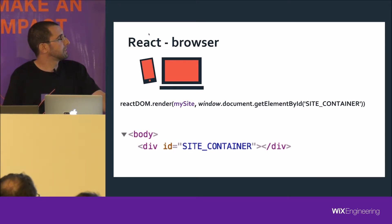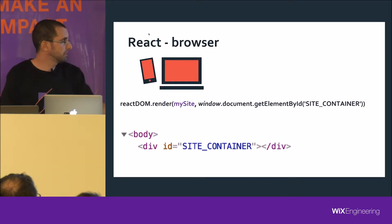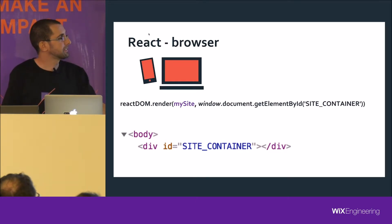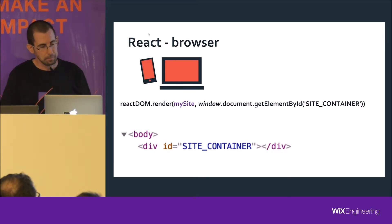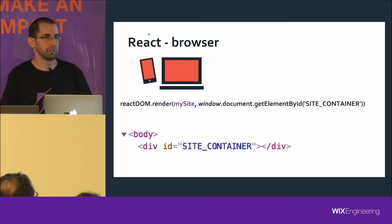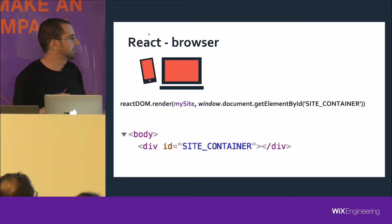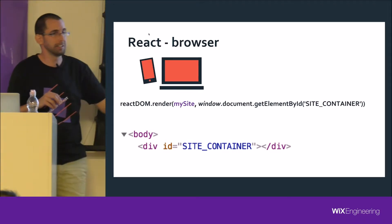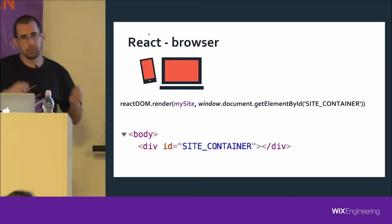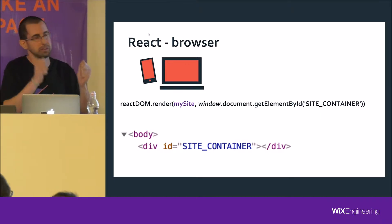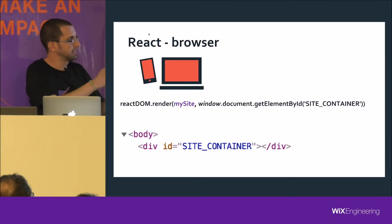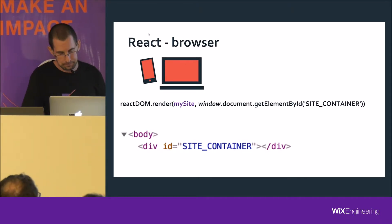In the browser, you give React your top-level component — let's call it mySite — and an HTML element. Usually if you're working only in the client, your HTML element is an empty div, and you tell React: please render mySite into this div.